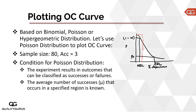We can use a number of distributions to draw the OC curve, and we haven't talked about distributions yet — so this is a topic you should revisit after going through the probability distributions covered later. Commonly used distributions for the OC curve are the binomial distribution, the Poisson distribution, and the hypergeometric distribution. In this example, we will be using the Poisson distribution.